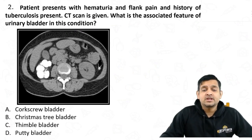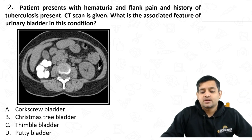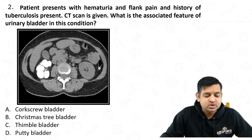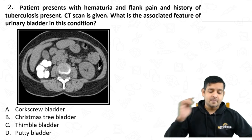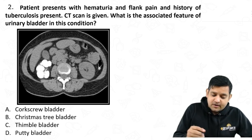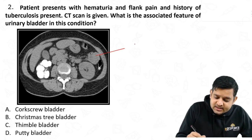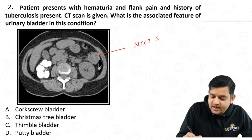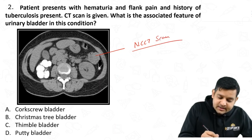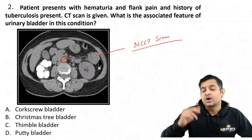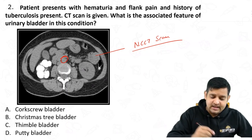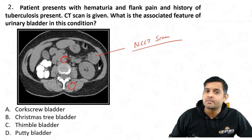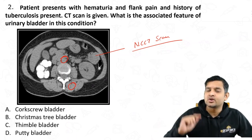A patient presents with hematuria, flank pain, and a history of tuberculosis. A CT scan is given. What is the associated feature of the urinary bladder in this condition? First, note this is a non-contrast CT scan. Look at the aorta — if the vessels are exactly similar in density to the muscle, it is a non-contrast CT.